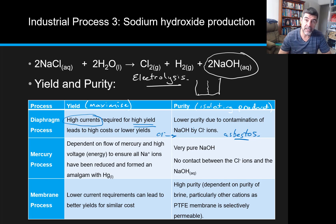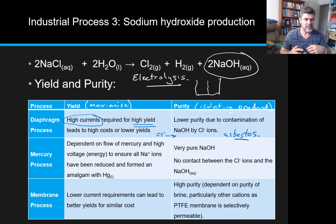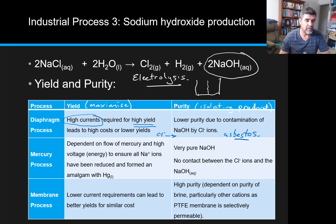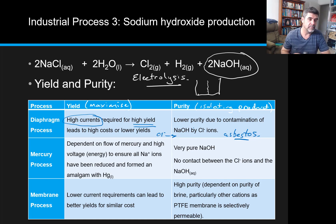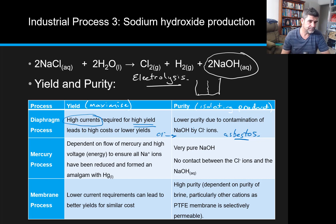So if we are doing a process like this, we want to make sure that we are reducing any of those. To give you just an extra little bit of background, you can see that the source of the sodium for the sodium hydroxide is sodium chloride aqueous. So this is like ocean water, brine, with very high salty content.